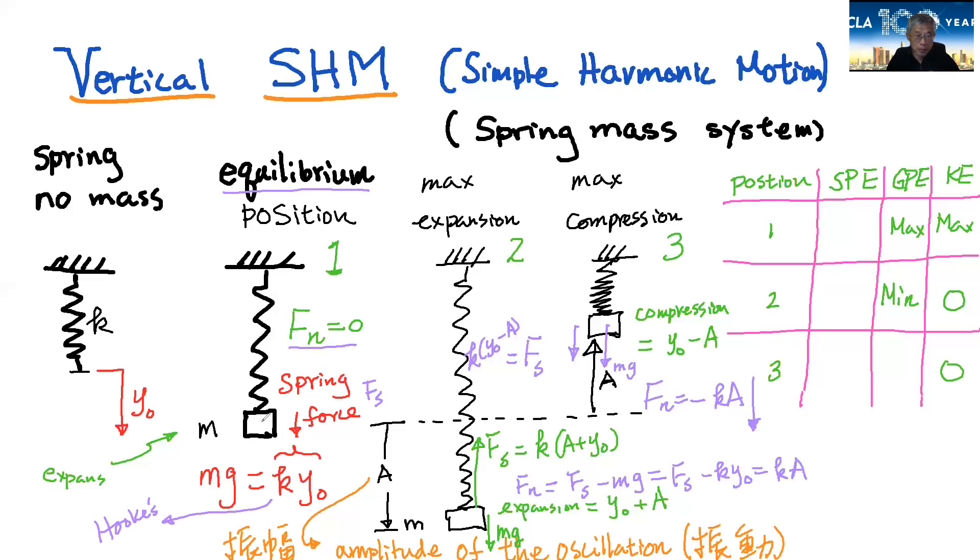So we have this mass, and if we pull it down to this position. And so we pull it down for this amount, which is called A. And why do we call A? Because that's the beginning of vibration, and that's called the amplitude.